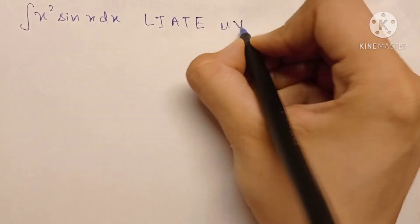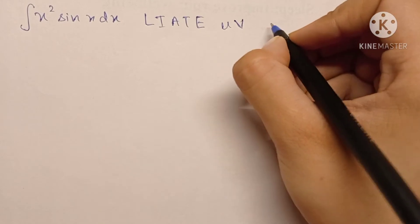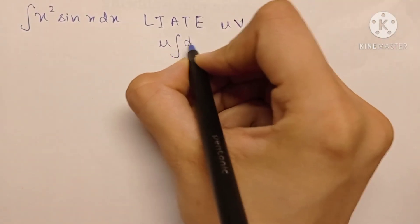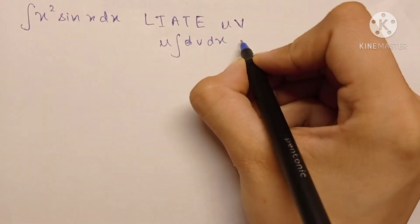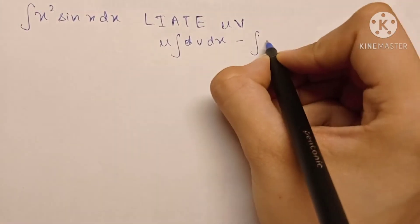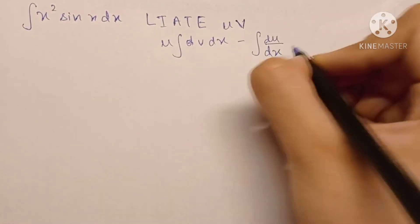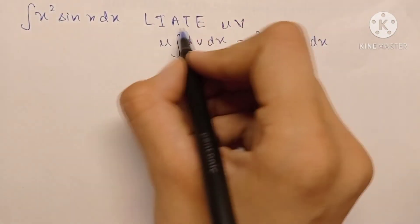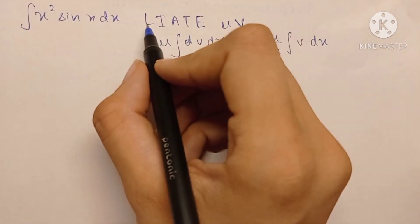The u term in the UV rule of integration, which is u into the integration of v dx minus the integration of differentiation of u into integration of v dx. So this is the order of preference, the first being the highest preference and the last being the lowest preference, which helps us decide which term of the integral we should keep as u.